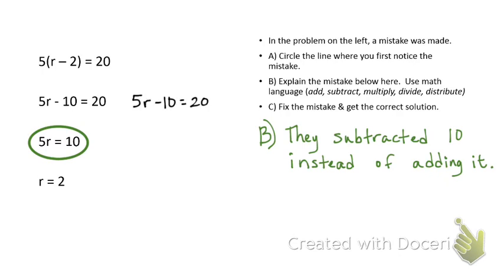Okay, so I'm going to correct it here. There is the line that is correct. In this situation I need to add 10 to both sides. The 10s are going to cancel out. My next line says 5r equals 30. And then I'm going to again divide by 5. And then I would get r equals 6. And that would be the final solution.